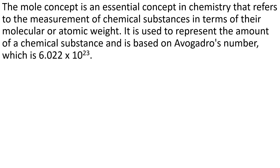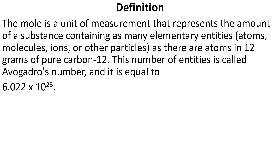What is Avogadro's number? Avogadro's number is 6.022 × 10²³. So what is the definition of mole concept? The mole is a unit of measurement that represents the amount of a substance containing as many elementary entities — for example, atoms, molecules, ions or other particles — as there are atoms in 12 grams of pure carbon-12. This number of entities is called Avogadro's number and is equal to 6.022 × 10²³.